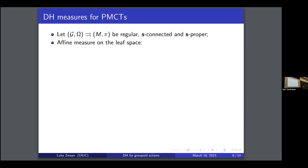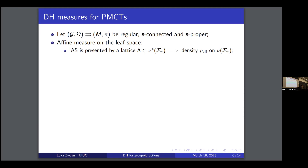How do you get this? The integral affine structure comes from a transverse integral affine structure on M, transverse to the symplectic foliation. This is essentially a certain lattice in the conormal bundle, which you obtain by taking kernels of exponentials in the isotropy Lie algebras and transporting them over, since the isotropy Lie algebras are isomorphic to the conormal spaces. That gives you a lattice, which turns out to be an integral affine structure.